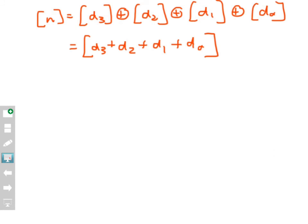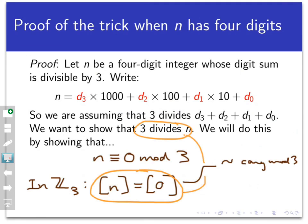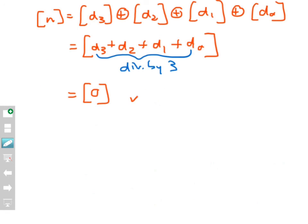But d3 plus d2 plus d1 plus d0 is exactly the digit sum of n, and we assumed that digit sum is divisible by three. Since that quantity is divisible by 3, its equivalence class mod 3 is the same as the class of 0. Therefore, the class of n equals the class of 0 in Z3, which means 3 divides n. That's exactly what we set out to prove. The proof is complete.